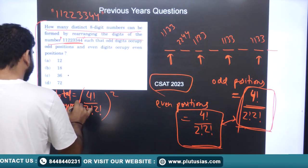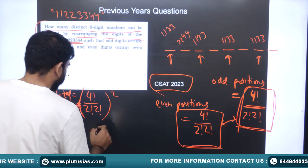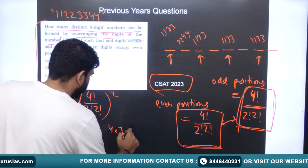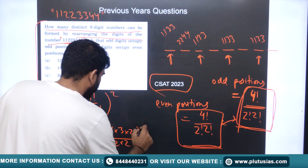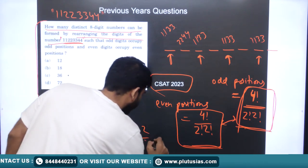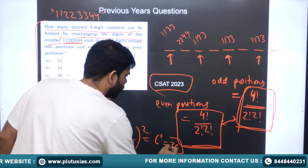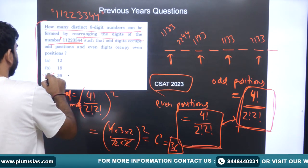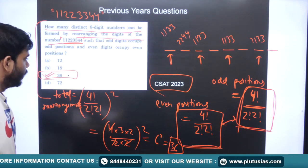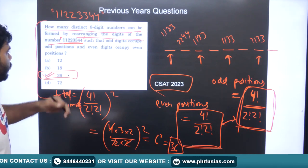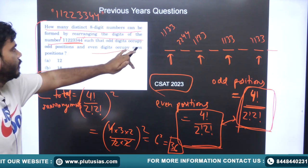Calculating: 4! / (2! × 2!) = 24 / 4 = 6. Squaring: 6² = 36. So the total number of rearrangements with the given constraints is 36.